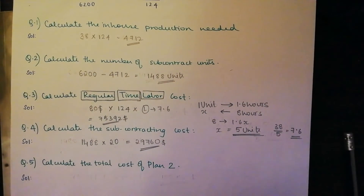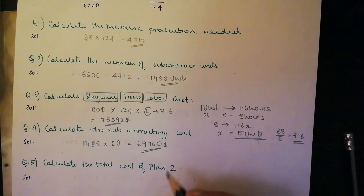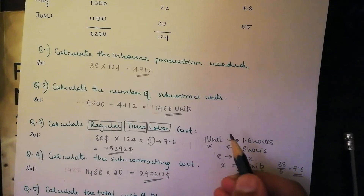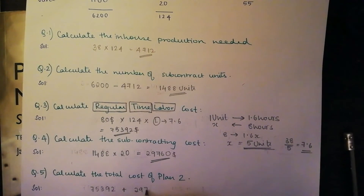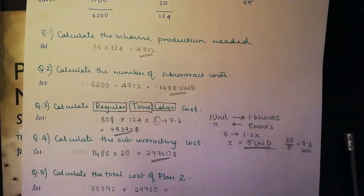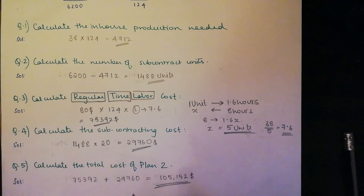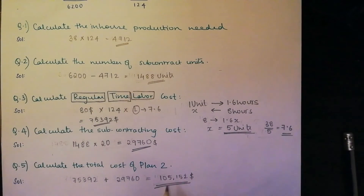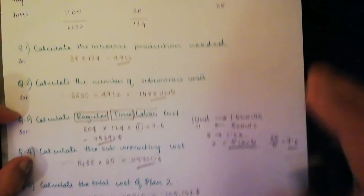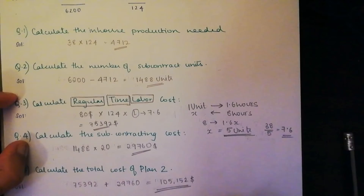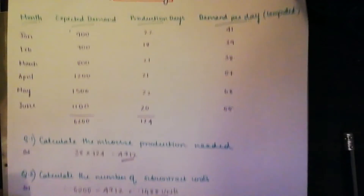The final question is to calculate the total cost of Plan 2 — simply summing up the regular time labor cost and the subcontracting cost: $75,392 plus $29,760, which equals $105,152. That's our total cost of Plan 2. It includes the cost for producing within the company (regular time labor cost) and the cost of outsourcing — that's what's unique about Plan 2.